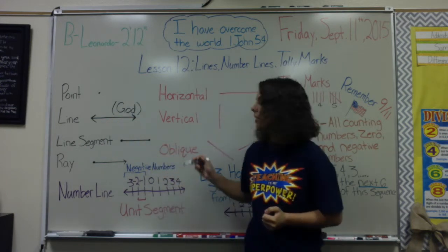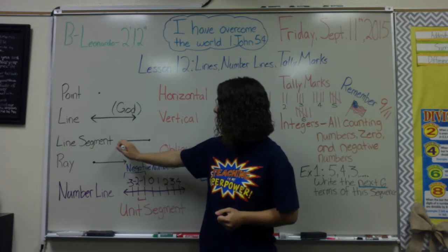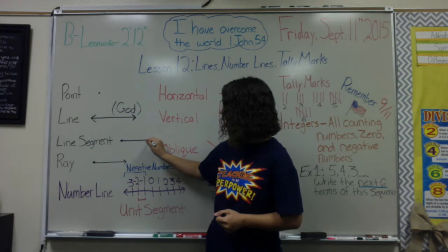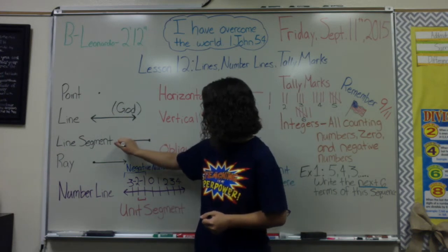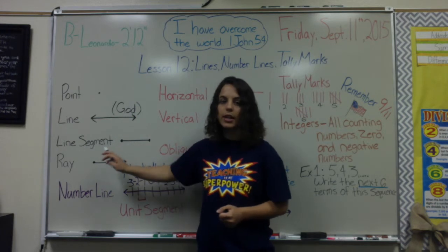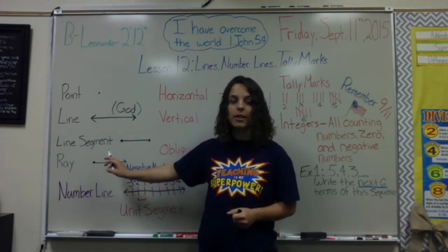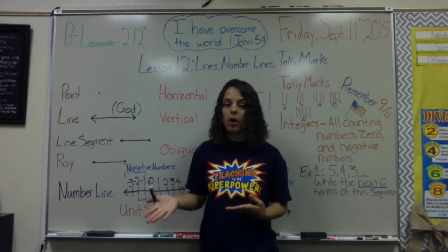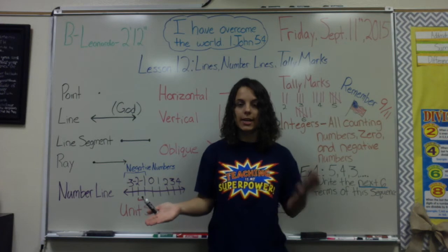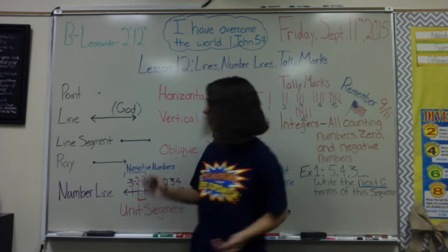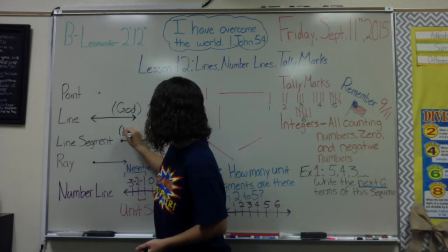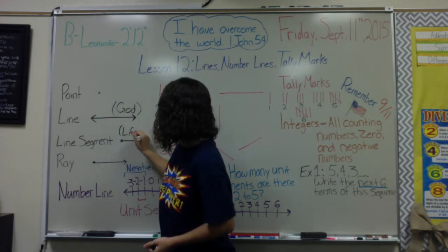In line segments, we do have a beginning and an end. We draw points or dots at the very end of the line segment to represent the starting point and the ending point. The way you can remember line segments is it's like our life on Earth — we're born on Earth, we die on Earth, we have a beginning and an end. I'm going to put in parentheses here: life on Earth.